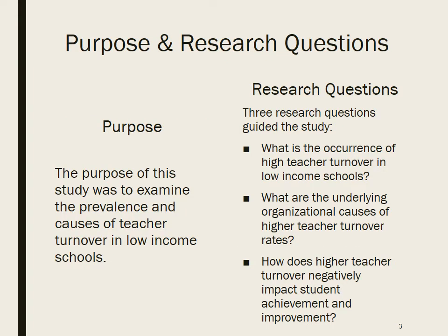The purpose of this study was to examine the prevalence and causes of teacher turnover in low-income schools by analyzing statistical information from school information reports, climate surveys, and student data surveys. By utilizing statistical data such as test scores and graduation rates, this quantitative research examines how the quality of education received by students is impacted. Three research questions guided this study: What is the occurrence of high teacher turnover in low-income schools? What are the underlying organizational causes of higher teacher turnover rates? And how does higher teacher turnover negatively impact student achievement and improvement?